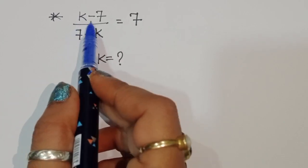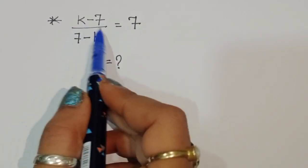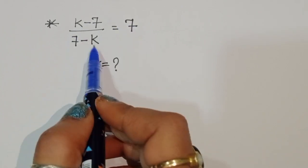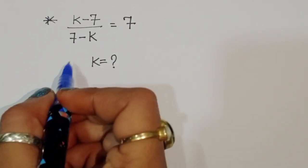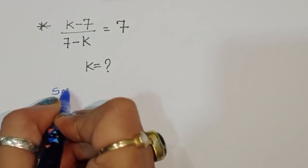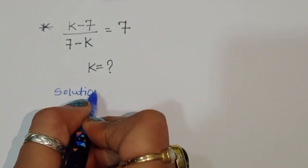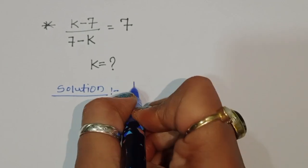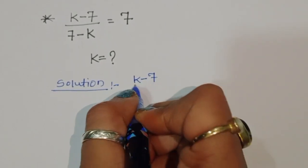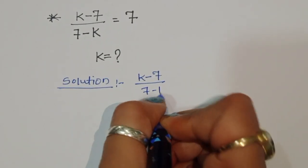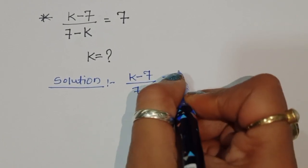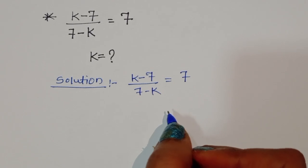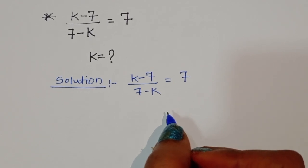The question is: k minus 7 divided by 7 minus k is equal to 7. We have to find out the value of k. Let's see the solution.